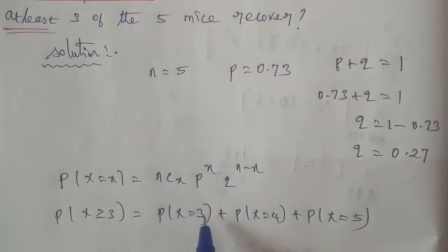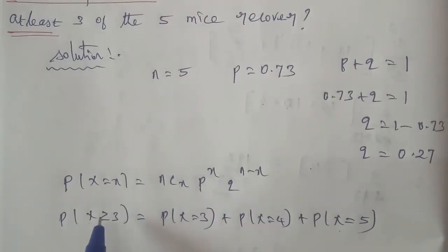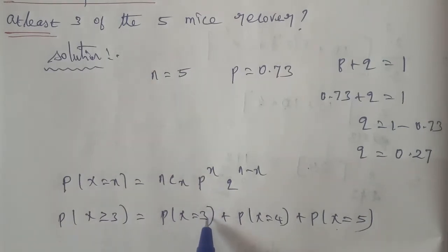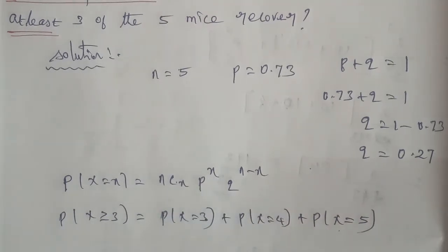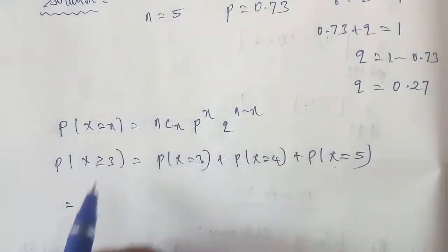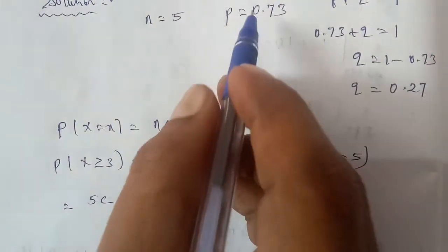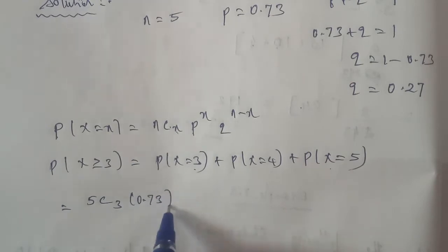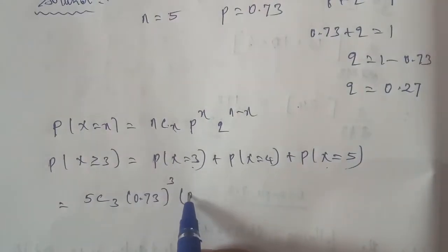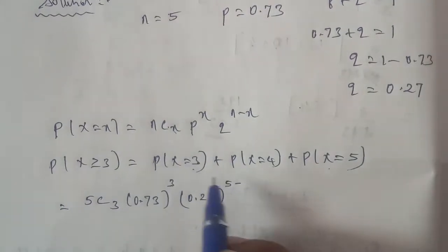Substituting the formula for X equals 3: 5C3 multiplied by (0.73) to the power of 3, and (0.27) to the power of n minus x, that is 5 minus 3, which is 2. So the first term is 5C3 × (0.73)³ × (0.27)².